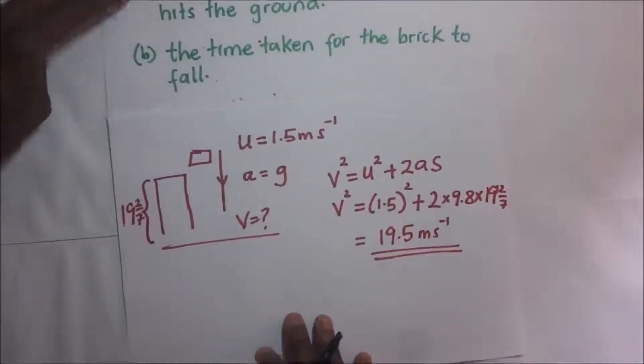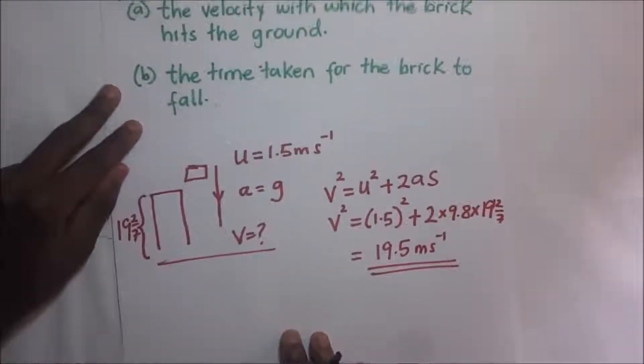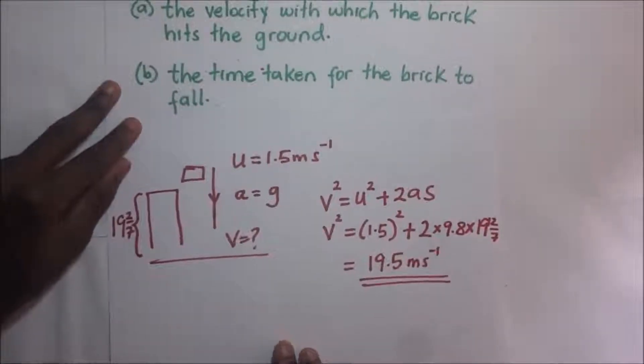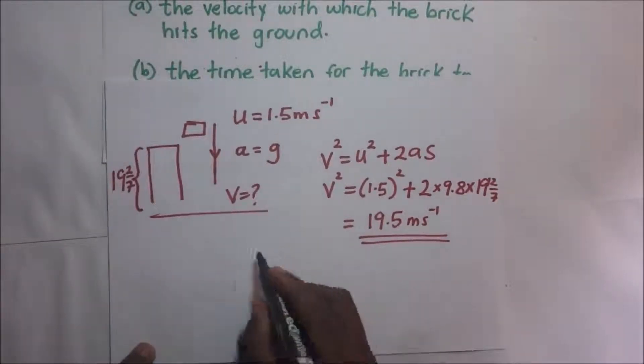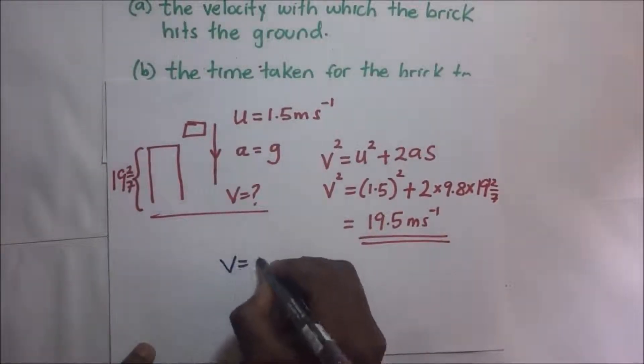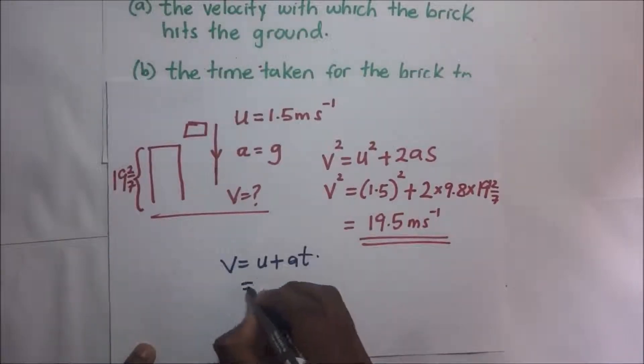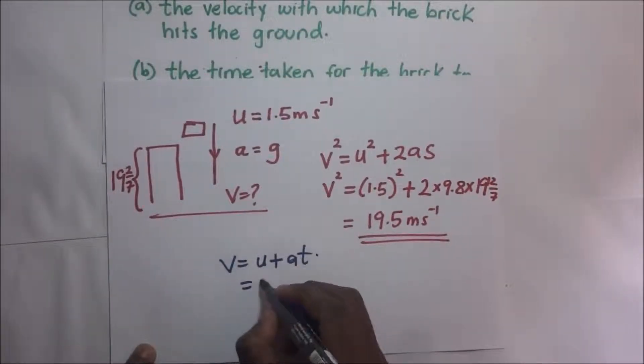So part B, we are having them asking us to find the time taken for the brick to fall. To get the time taken for the brick to fall, using the first equation of motion, v is going to be equal to u + at. And that's going to be our initial speed